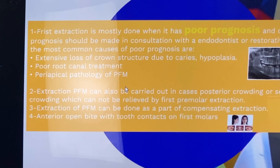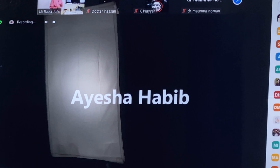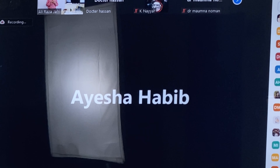When approaching indications for extraction of the first permanent molar, we examine different parts of the tooth: the crown — how much caries and restoration is present; the roots — developmental status, root pathology, root canal quality; and the periodontium — any furcation involvement or aggressive periodontitis.